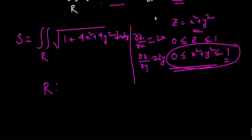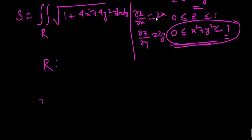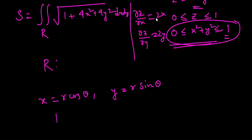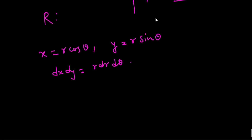Now we convert to polar coordinates. Let x = r cosθ and y = r sinθ. The Jacobian gives dx dy = r dr dθ.